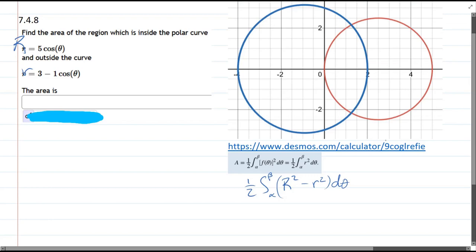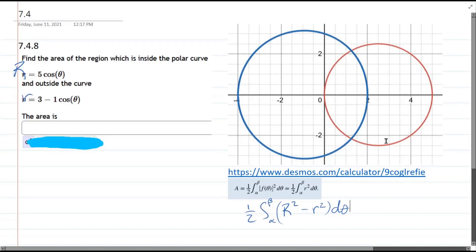You don't have to use Desmos, but we still need the intersections. If you don't have Desmos, how do you find intersections? Set one equation equal to the other: big R equals little r.